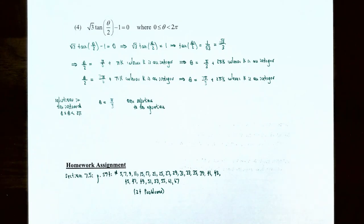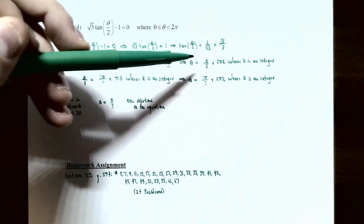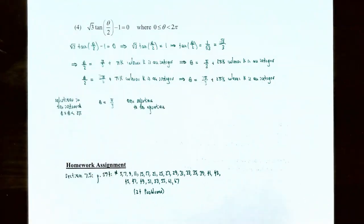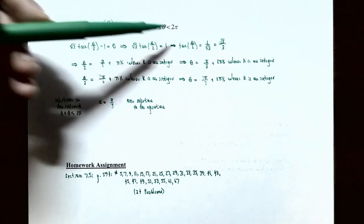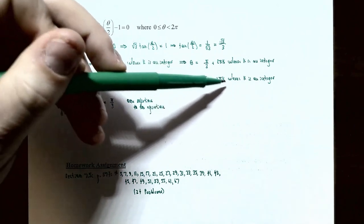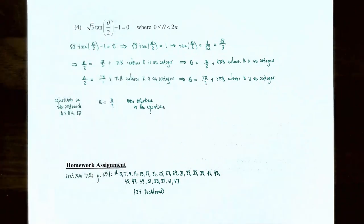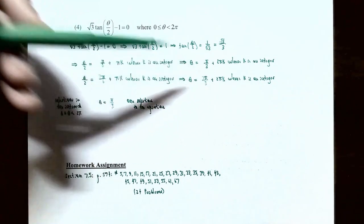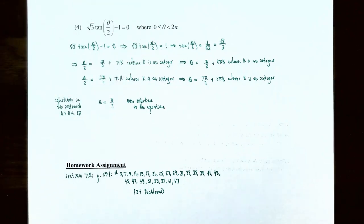For k equals zero in the first equation: theta equals pi over three, which is between zero and two pi — so that's a valid solution. For k equals zero in the second equation: theta equals seven pi over three, which is greater than two pi and outside the interval. So the only solution to the equation between zero and two pi radians is theta equals pi over three.